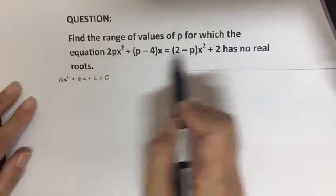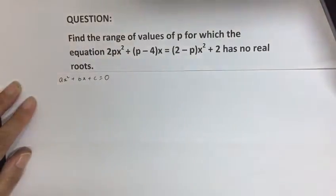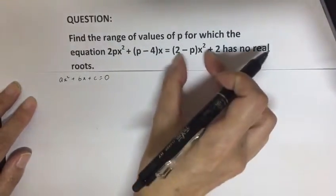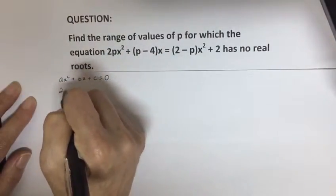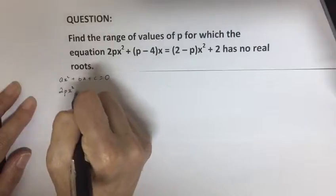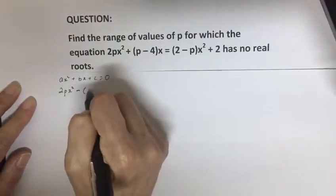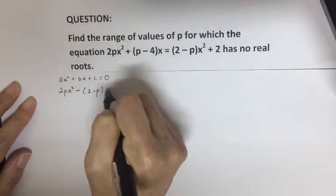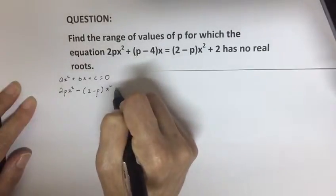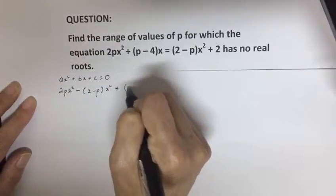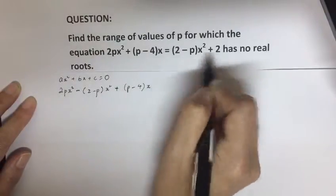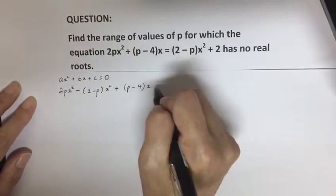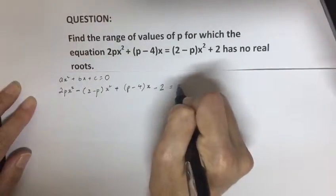But what you can do is arrange it into this form. So I put the x² term to the left side, and you're getting 2px² minus (2 - p)x² plus (p - 4)x. The constant term you move to the other side becomes -2 = 0.